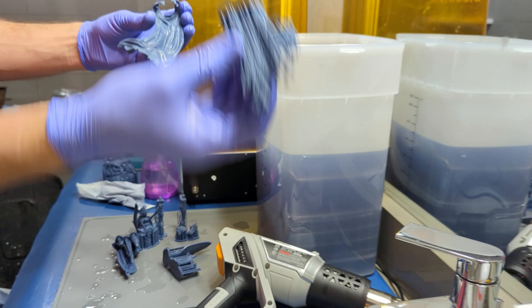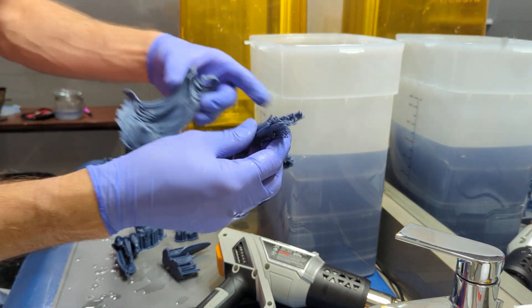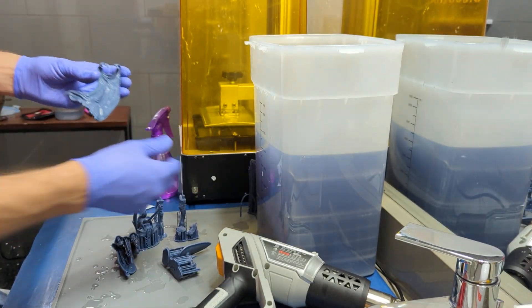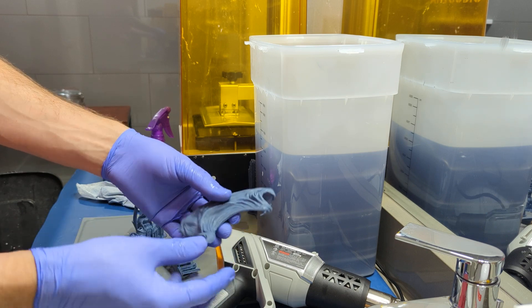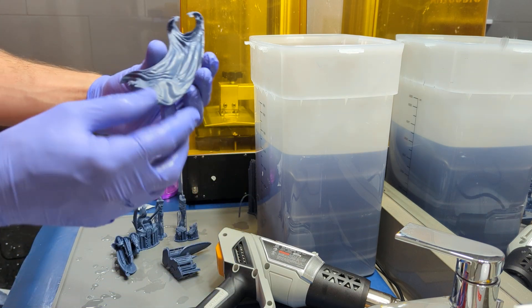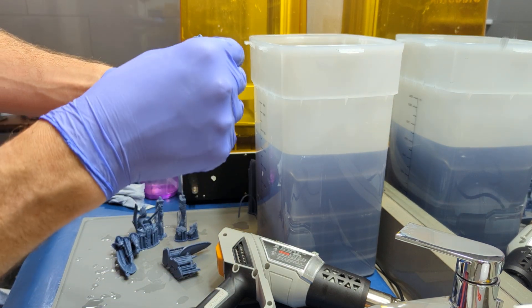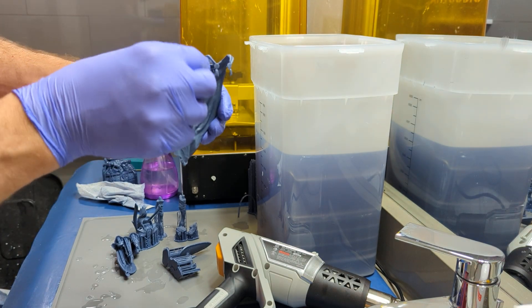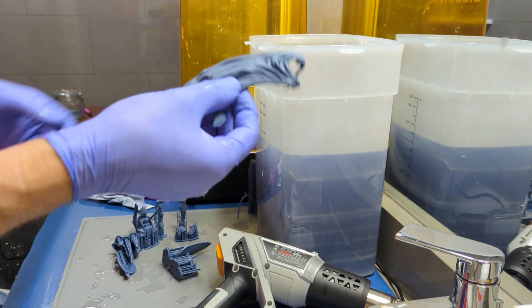There we go, there's my supports. I'll save these tall ones especially for doing tank cleans. And there's my model. Came off pretty clean. There's a little bit of small supports here. Those little tiny ones I've noticed are always a little more difficult to get off.